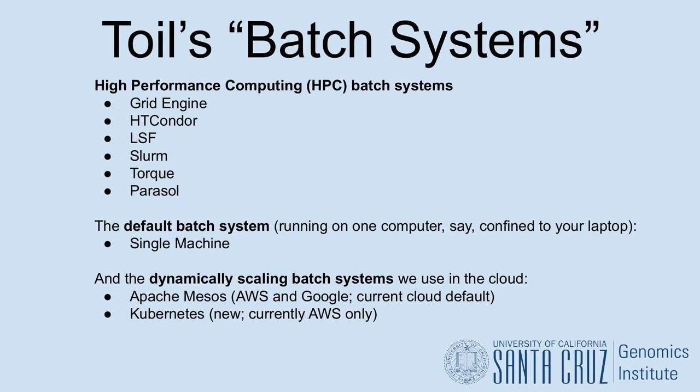Toil also supports multiple compute backends, referred to as batch systems, and they describe the main environment that Toil runs in. Batch systems in Toil can generally be broken down into three basic groups: High-performance computing systems, or HPCs, like Grid Engine, HT Condor, LSF, Slurm, Torque, and Parasol.